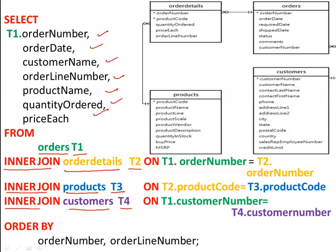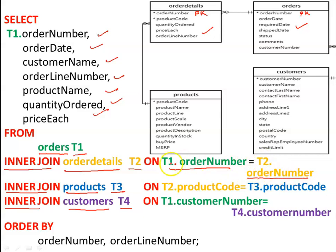First we perform a join between the orders table and the order details table. The join condition here is the order number — acting as a primary key in the orders table and as a foreign key in the order details table. So the condition is T1.order_number = T2.order_number, or in other words orders.order_number = order_details.order_number.